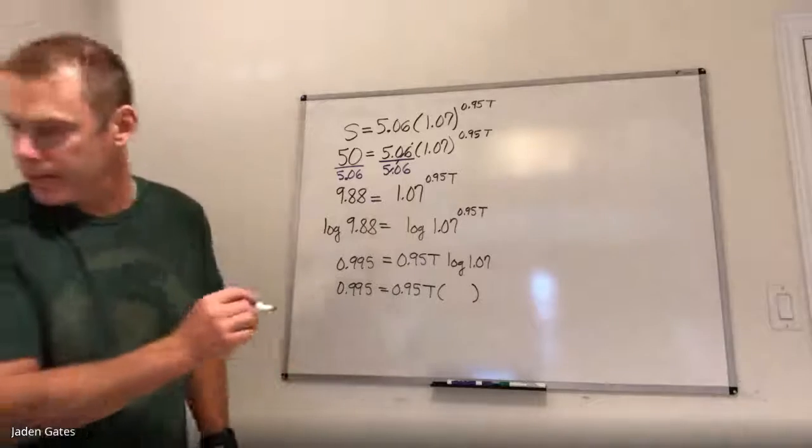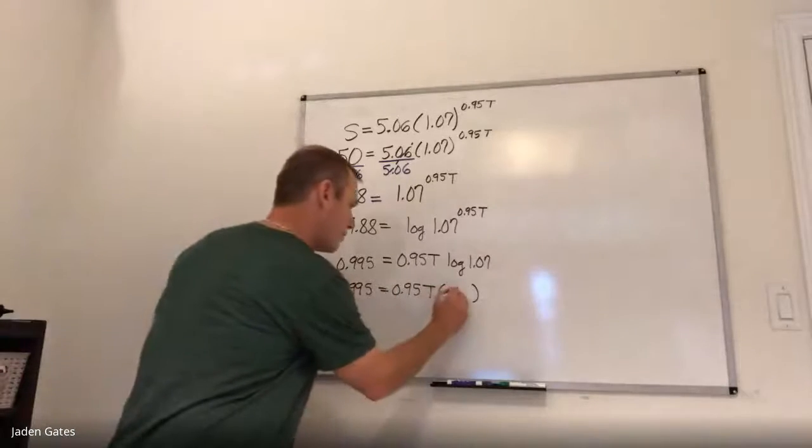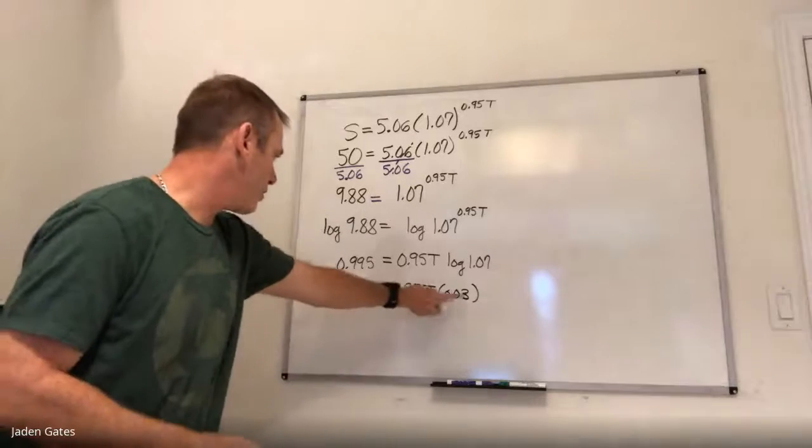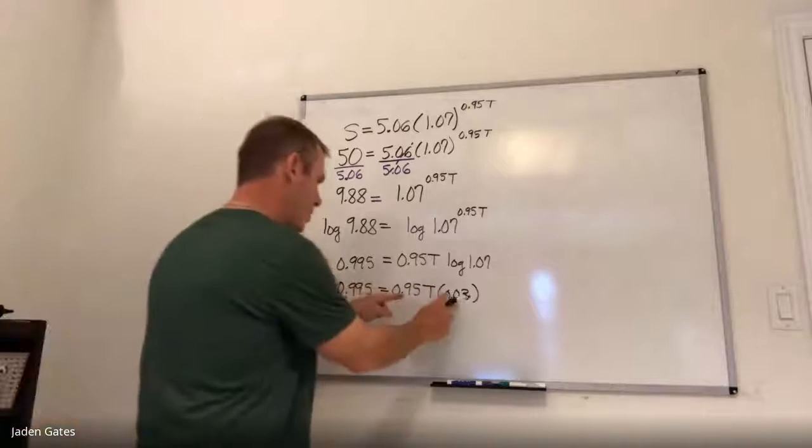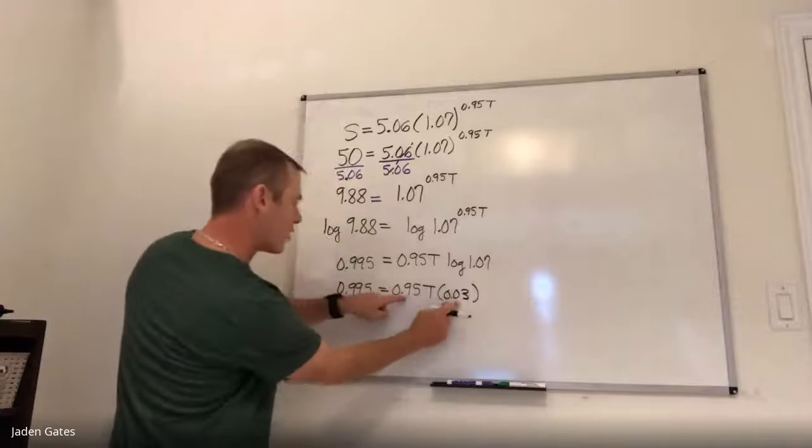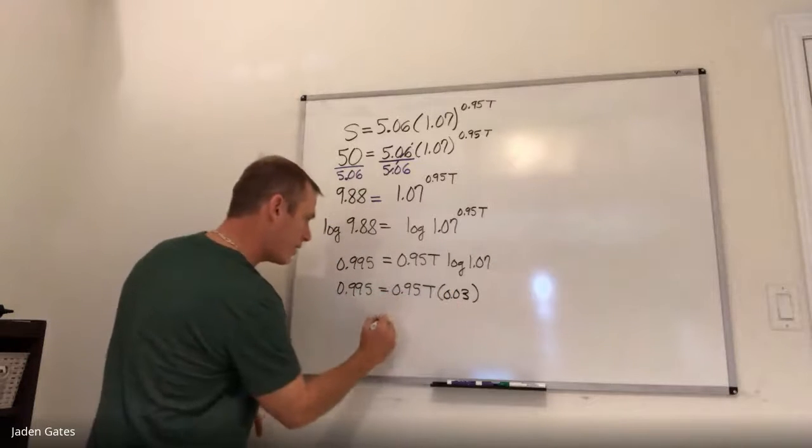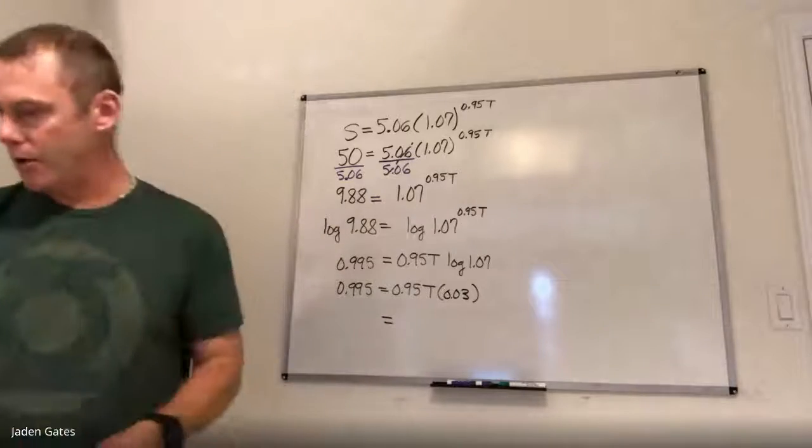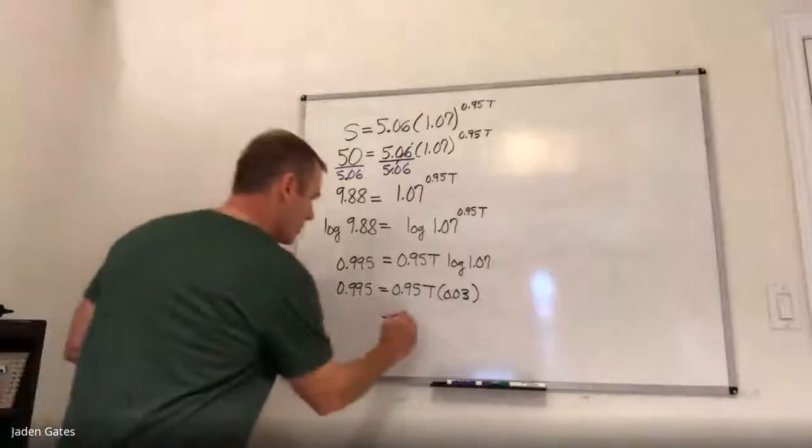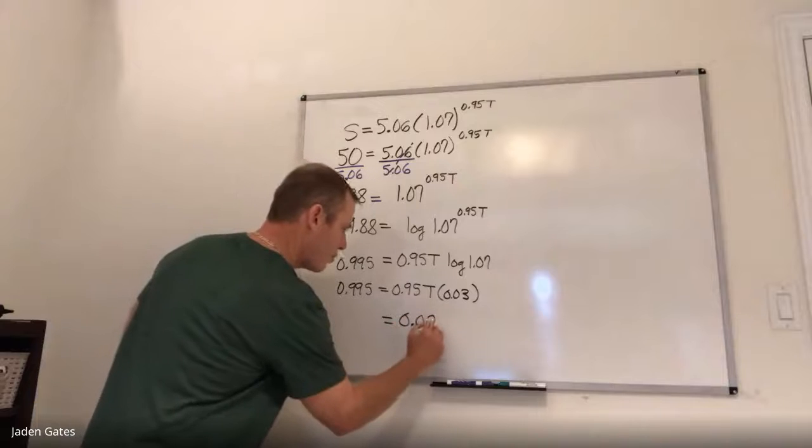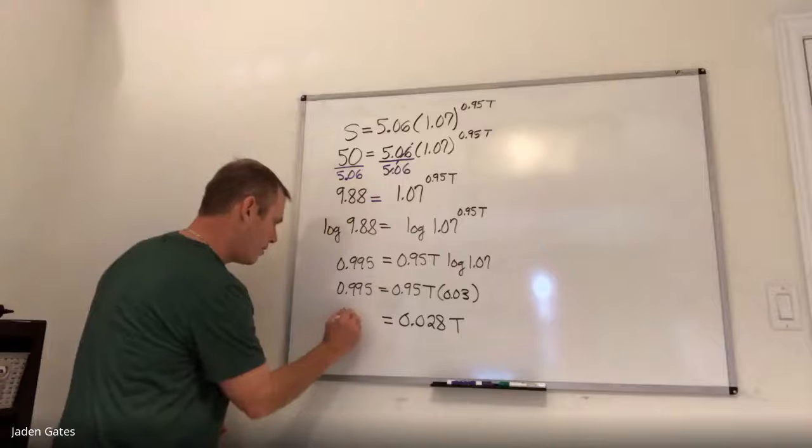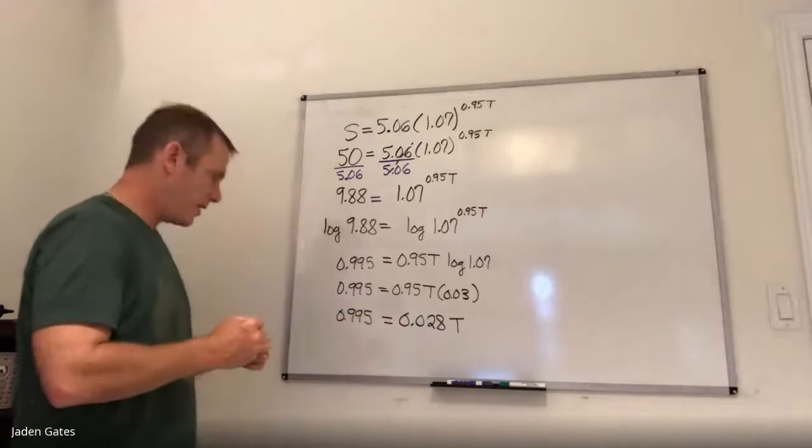What are you going to get, aren't I? Yeah. All right. I got a T here. I got a number here. These are all multiplied, which means it doesn't matter which order. So I'm going to put these two numbers together, the 0.95 and the 0.03. So I multiply those together and I get 0.028 T. And I still have this 0.995.